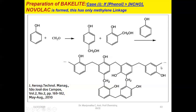The polymerization continues, and wherever methylene groups are present at the para position, linking at the bottom part is also expected, forming a side group on the linear backbone. This is the structure of novolac, which contains only methylene linkage between the methylol phenols.